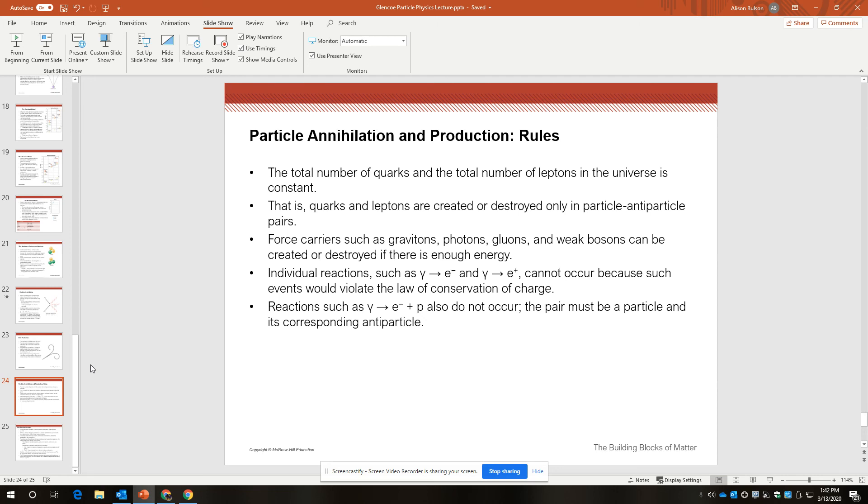Force carriers such as gravitons, photons, gluons, weak bosons can be created or destroyed if there's enough energy. Individual reactions, say a gamma ray turning into a single electron or a gamma ray turning into a single positron, cannot occur because such events would violate the law of conservation of charge.